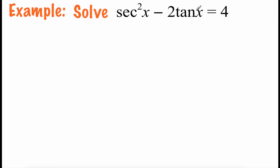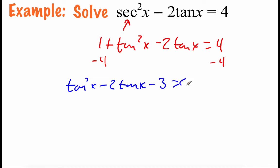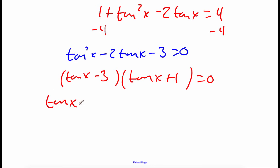In our next example, we've got secant squared minus 2 tangent of x equals 4. I see secant and tangent, so I'm going to use a Pythagorean identity to replace secant squared with 1 plus tangent squared of x. So we get 1 plus tangent squared of x minus 2 tangent of x equals 4. This has a quadratic look to it, so I want a 0 on one side. Subtracting 4 and rewriting in descending order: tangent squared of x minus 2 tangent of x minus 3 equals 0.